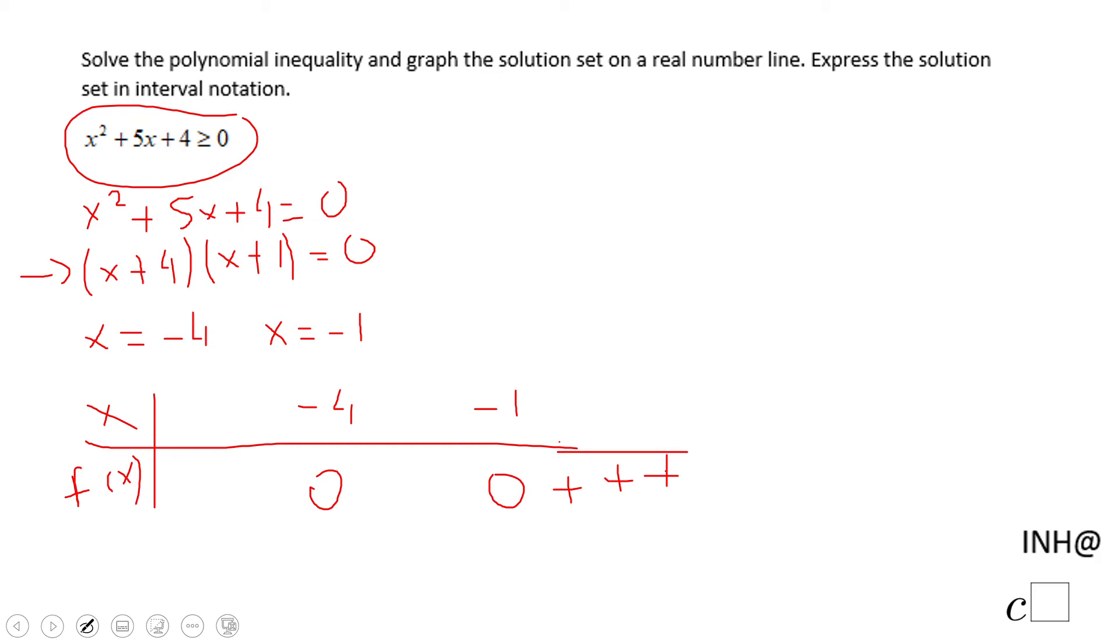And then I can pick a number between negative one and negative four. Negative three will be fine. And if you notice, negative three plus four is positive one, and negative three plus one is negative two. So here we're going to end up with a negative value.